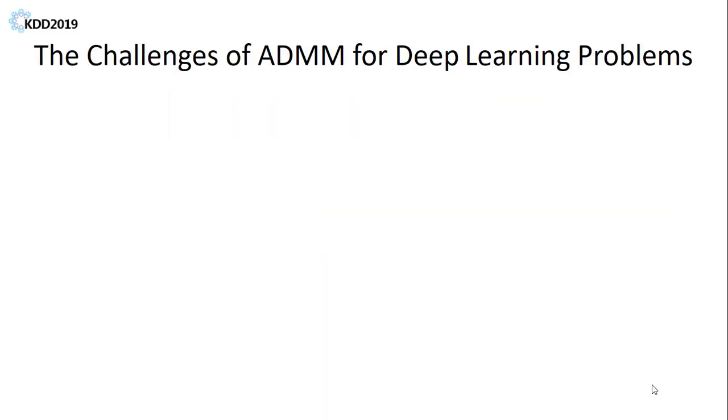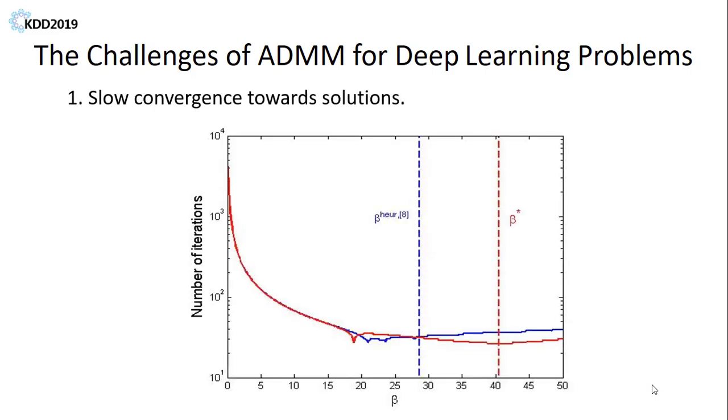Even though ADMM is powerful, several challenges must be overcome. Firstly, ADMM converges slowly to the solution. It usually takes hundreds of iterations or more for ADMM to approach the optimal point.